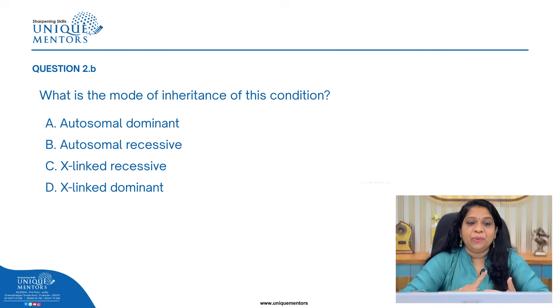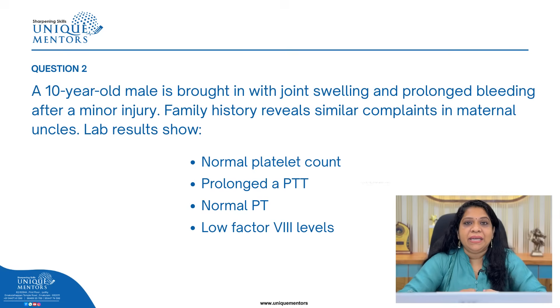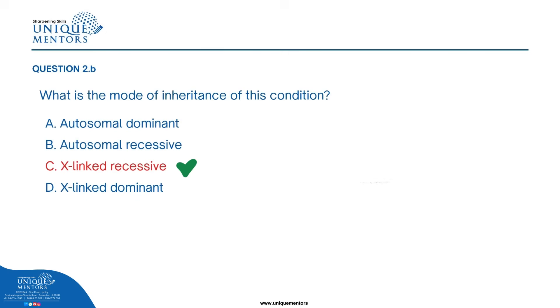X-linked conditions are disorders usually expressed in males while females remain as carriers. In the previous question, the clue was that maternal uncles were affected — confirming male gender association. Since only males are affected and females are carriers, it must be X-linked recessive. Males have only one X chromosome, while females have two, explaining why females remain carriers. So the answer is X-linked recessive.